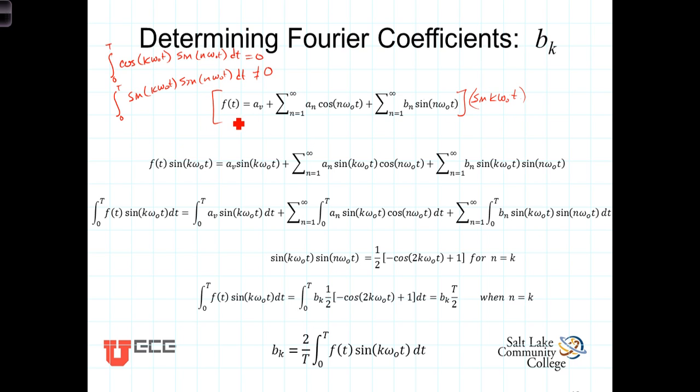So, first of all, distributing this to both sides of the equation, we get f of t is multiplied by that. The a sub v is multiplied by that. This term here is multiplied by the sine of k omega-0 t.